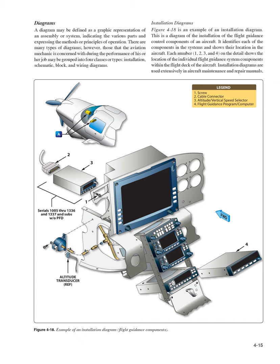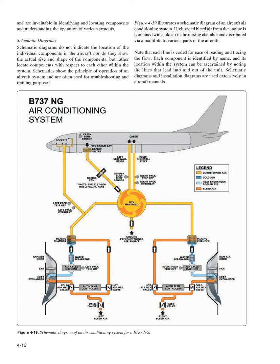An installation diagram shows the installation of components of an aircraft system. It identifies each of the components in the system and shows their location in the aircraft. Numbers on the detail show the location of individual flight guidance system components within the flight deck. Installation diagrams are used extensively in aircraft maintenance and repair manuals, and are invaluable in identifying and locating components and understanding the operation of various systems.